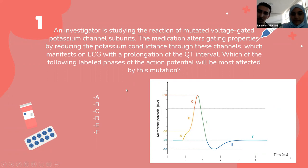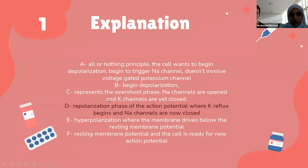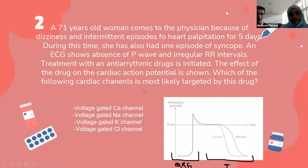We're going to share the presentation with you after the session so that you have the freedom to read the explanation of the correct answers as well as the wrong answers. As we said, D is the correct answer because this is where the repolarization happens and the potassium-gated channels are going to open. Now let's move to the next question.